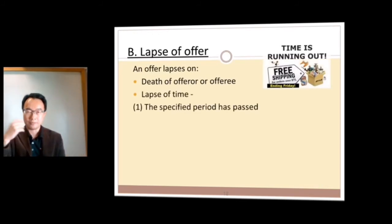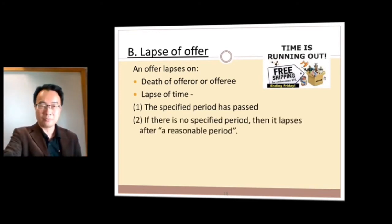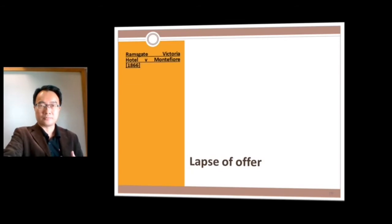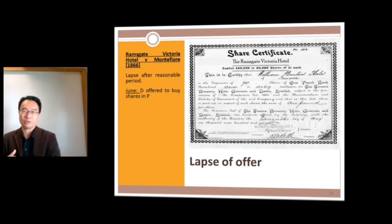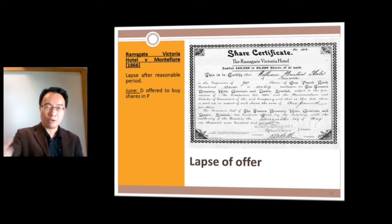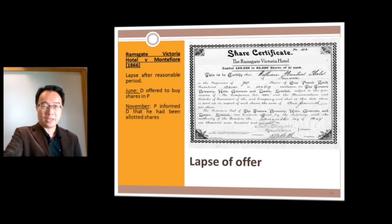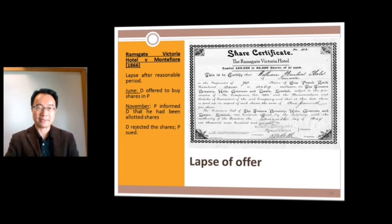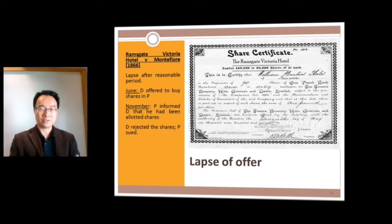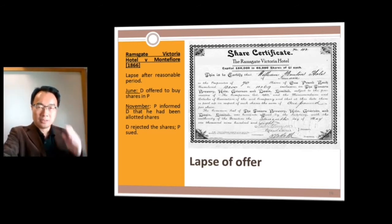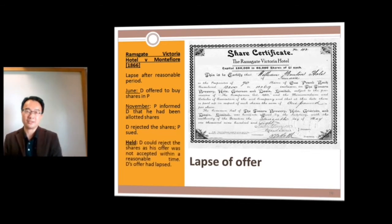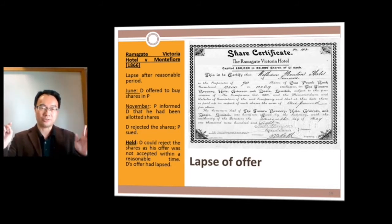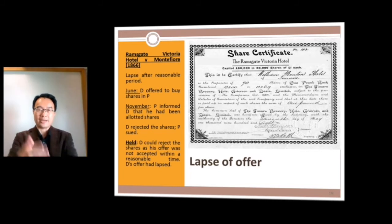The other way an offer terminates is by lapsing. Time can pass — if there's no specified period, then it's a reasonable period. In the case of Ramsgate Victoria Hotel v Montefiore, Mr. Montefiore offered to buy shares in the hotel in June, and in November the hotel said he'd been allotted shares. By then Mr. Montefiore had changed his mind. The judge said he could reject it because the offer had lapsed — he offered to buy shares in June and it was now November, so it was over.